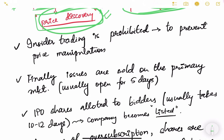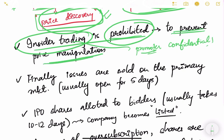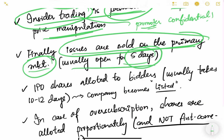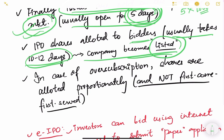Before actual bidding, insider trading is prohibited. Promoters of the company and people working within it who have confidential information not available to the public cannot bid — this is done to prevent price manipulation. Finally, the IPO is open on the primary market. It is open for five days, during which people can bid. For example, somebody wants to invest 5000 rupees and bids for five shares at rupees 1000 each.